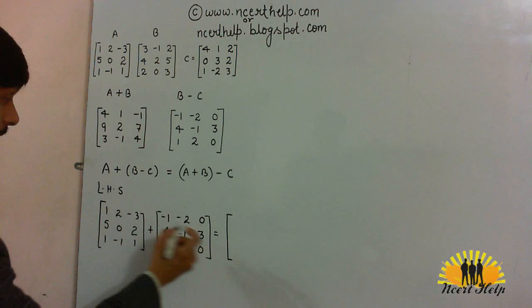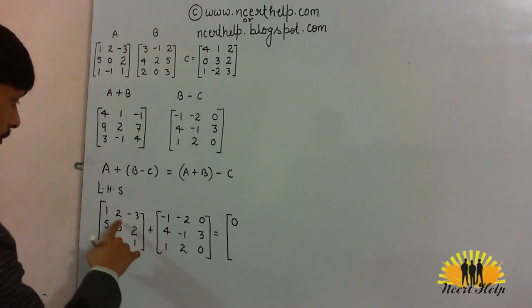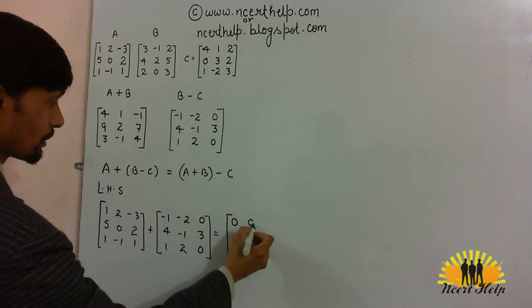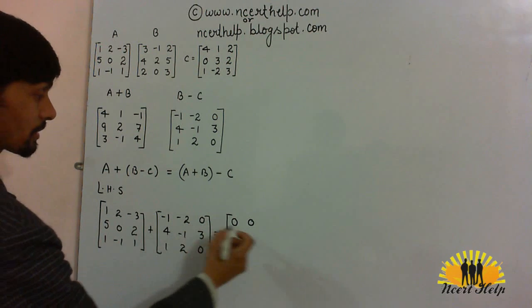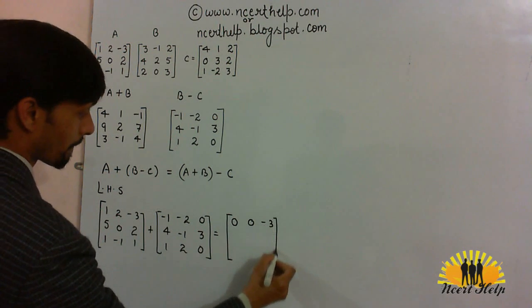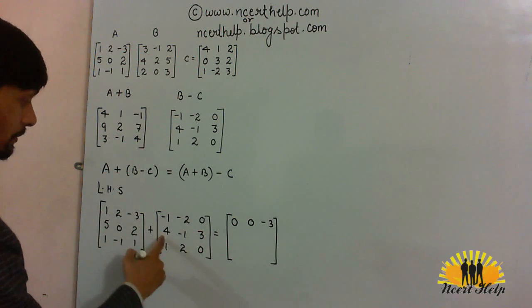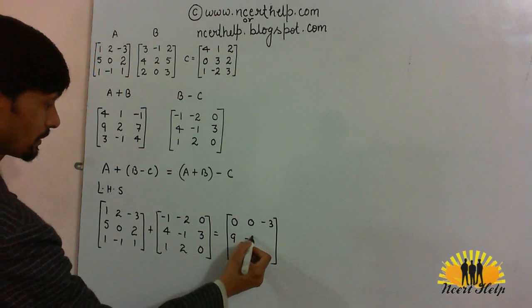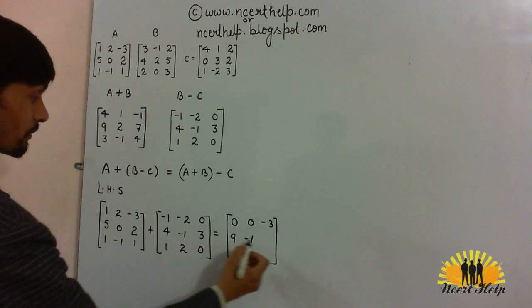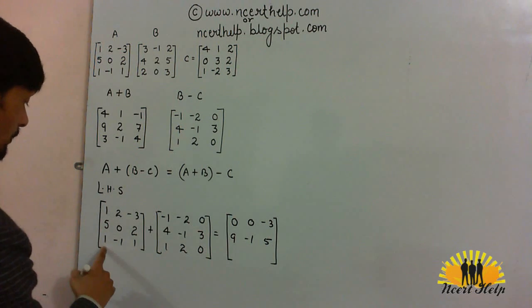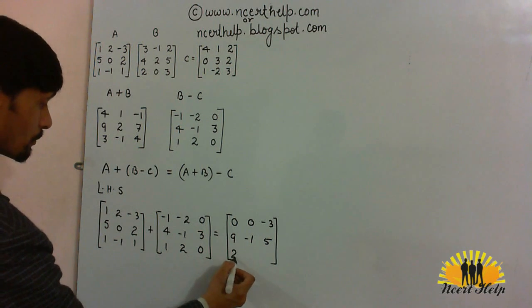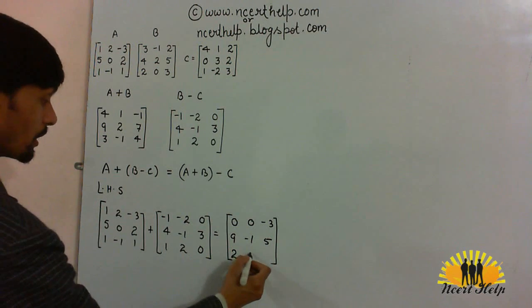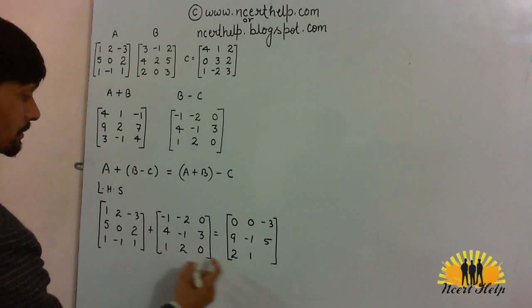Let's see what we will get. 1 minus 1, 0. 2 minus 2, 0. Minus 3 plus 0, minus 3. 5 plus 4, 9. 0 minus 1, minus 1. 2 plus 3, 5. 1, 1, 2. Minus 1 plus 2, 1. 1 plus 0 is 1.